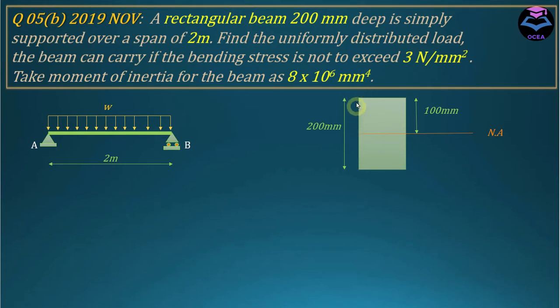In this question, we have a rectangular beam 200 millimeters deep, simply supported over a span of 2 meters. The beam is subjected to a UDL (uniformly distributed load) with intensity W. The question asks us to find the maximum value of W.